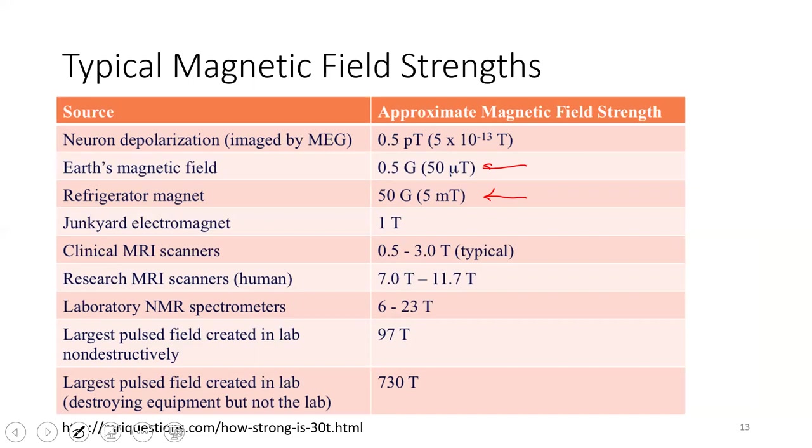The next thing they have in this list that you can compare to is a junkyard electromagnet—picture that big thing picking up crushed cars. That's a one tesla magnet. Then you've got MRI scanners or laboratory NMR spectrometers, which the chemistry department has in the basement of Franklin. Those are much stronger magnets. You can also build pulsed field magnets. You'll see there's a non-destructive and a destructive pulsed field magnet. The destructive basically means you've crushed the material that made up the magnet under that magnetic field strength.